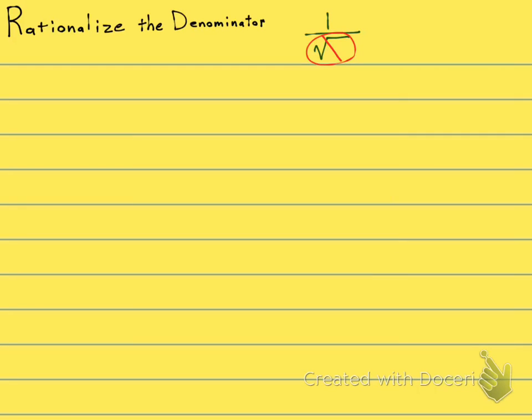So let's not make our math teacher sad. We don't want radicals in the denominator, and there's a way to get rid of them. It's called rationalizing the denominator.